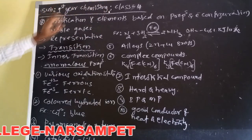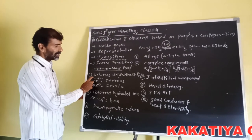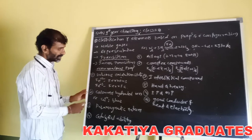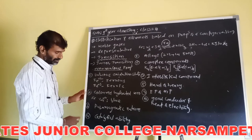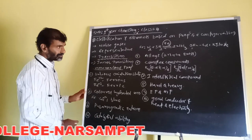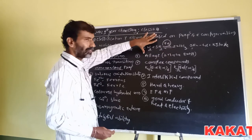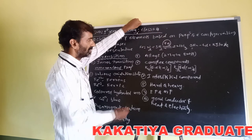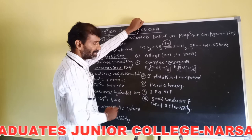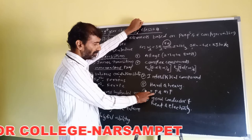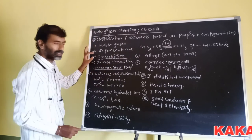Transition elements are good conductors of heat and electricity. To summarize, these ten points belong to the anomalous properties of transition elements: various oxidation states, colored hydrated ions, paramagnetic nature, catalytic ability (e.g., formation of ammonia with iron as catalyst), formation of alloys (e.g., brass), complex compounds, interstitial compounds, hard and heavy metals, high boiling and melting points, and good conductors of heat and electricity.